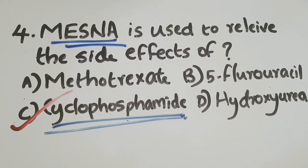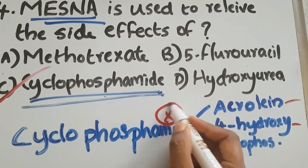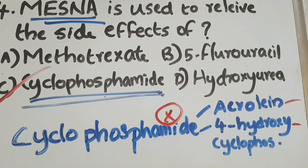Mesna helps to protect the lining of the bladder against damage from cyclophosphamide, which is mainly used in cancer chemotherapy. Cyclophosphamide metabolizes into urotoxic metabolites — acrolein and 4-hydroxycyclophosphamide. Mesna reacts chemically with these metabolites, resulting in their detoxification — making them less toxic — and thereby inhibiting the toxicity associated with cyclophosphamide.